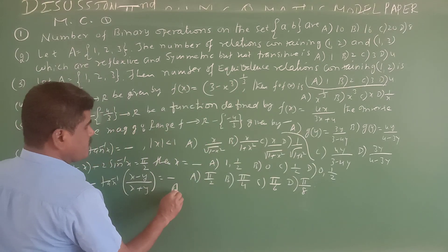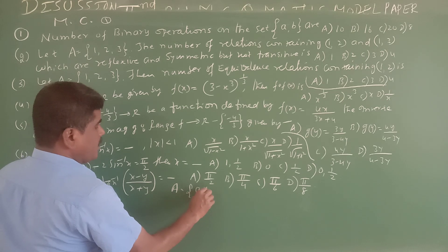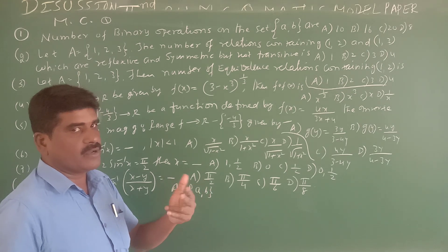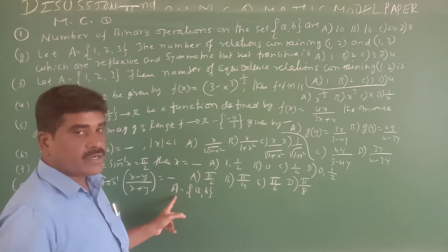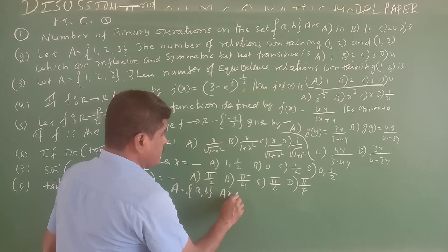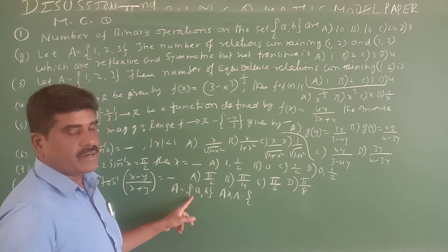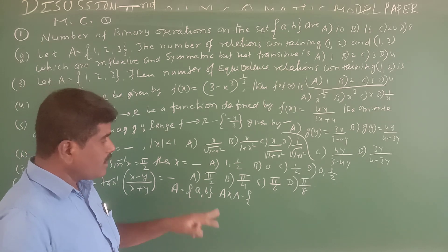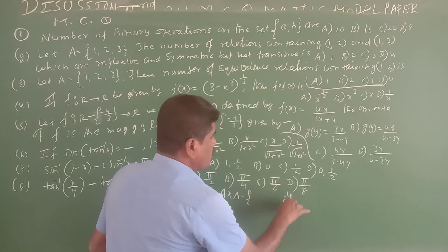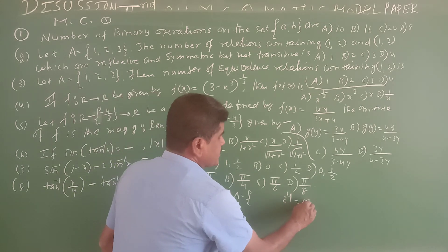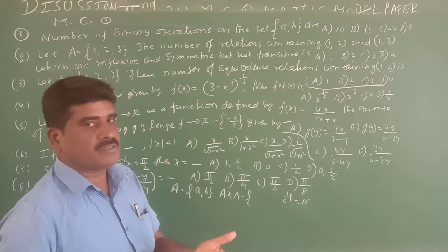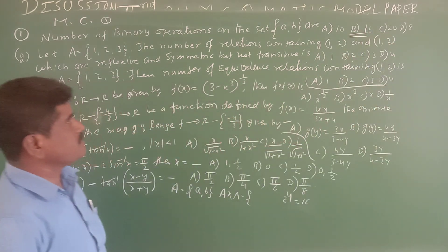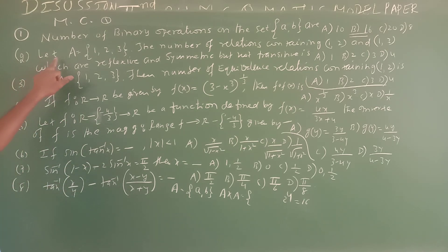For the set {a, b}, we compute A cross A. The set {a,b} has 2 elements, so A×A has 4 elements. The number of binary operations is 2 to the power of n², which gives 2 to the power 4 equals 16. So Option B is the answer.